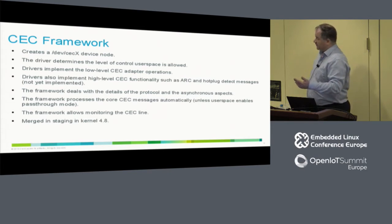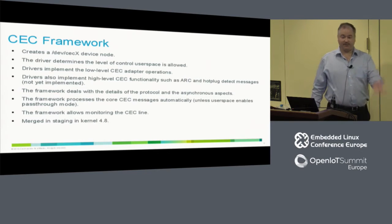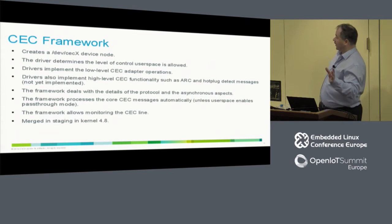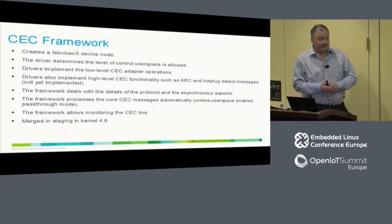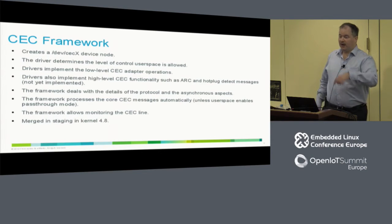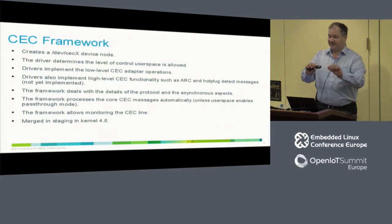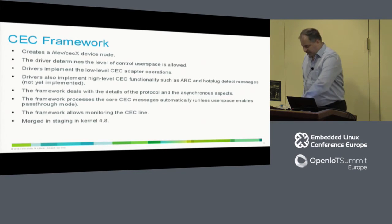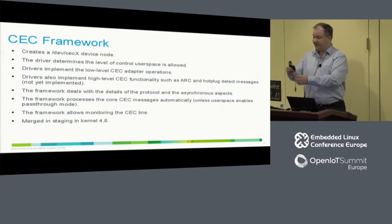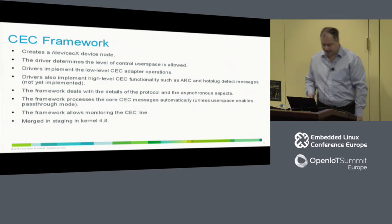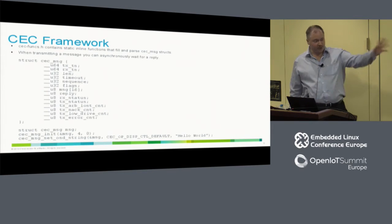A lot of core CEC messages are handled automatically by the framework — for example, when a device sends its physical address around, it's automatically registered. There is support for monitoring CEC messages, which is absolutely brilliant for debugging. It depends on hardware support — the framework will always monitor messages you transmit or receive, and if the hardware supports it, you can also monitor messages going between two other CEC devices. This dongle can be put in that mode, so you can put it in the middle of a setup and use your PC to monitor what is going on over the CEC bus. It was merged in staging in 4.8.